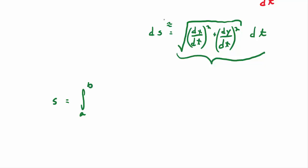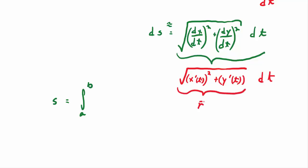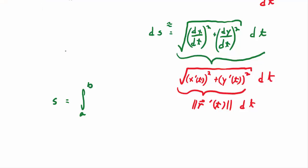The expression inside the integral — DX/DT squared plus DY/DT squared under the square root — is exactly X prime of T squared plus Y prime of T squared under the square root. This is exactly the magnitude of R prime of T, so S equals the integral from A to B of the magnitude of R prime of T, DT. This argument also works in three dimensions because the distance formula generalizes into space with a DZ squared term.